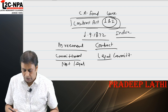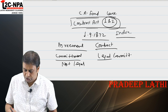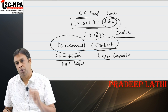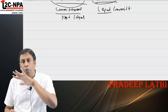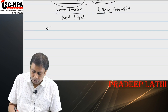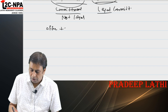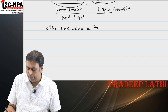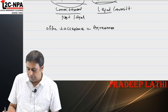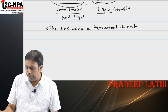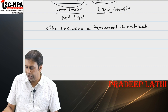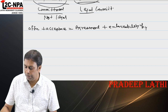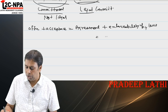So, agreement in your understanding is not enforceable by law. What is contract? Contract is equal to agreement plus enforceability by law. An agreement plus enforceability by law — that is what a contract is.